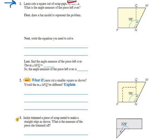Again, Laura cuts a square out of scrap paper, as shown right here. What is the angle measure of the piece left over? The piece left over would be where we have our X. It says, first draw a bar model to represent the problem, and then write the equation that we need to solve.